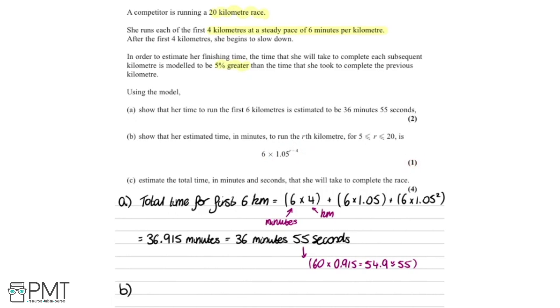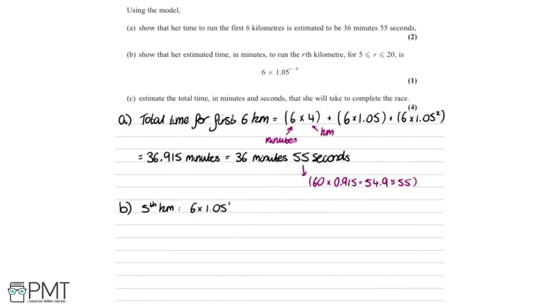So we're just going to write down what we know. For the 5th kilometer it takes her 6 times 1.05 to the power of 1. The 6th kilometer takes 6 times 1.05 squared, so it will follow that the 7th kilometer will take 6 times 1.05 to the power of 3. And if we work out the common pattern here, for the 5th kilometer we take away the power minus 1 and we get 4. The 6th kilometer, we take away the power and we get 4, and the 7th kilometer we take away the power and we get 4 as well.